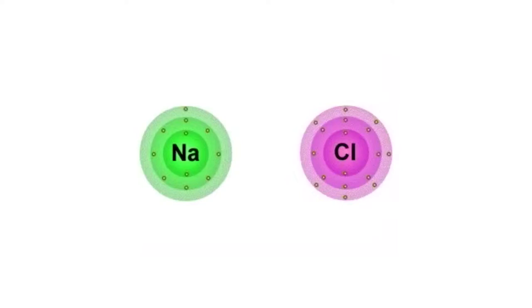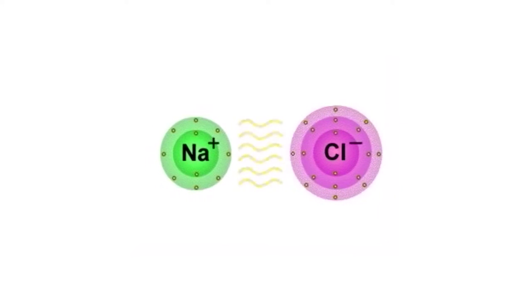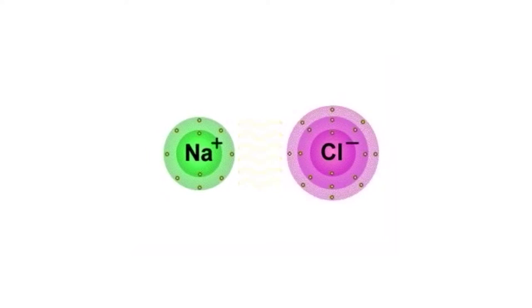The nice thing about a salt is it's formed from a positive ion and a negative ion, like sodium's positively charged and chlorine's negatively charged, and they're not really going to bond, they're just going to kind of associate one with another. And that's what's called an ionic bond.